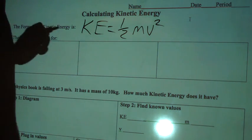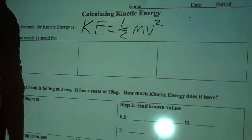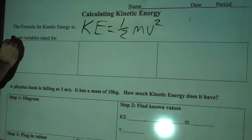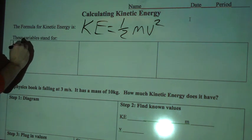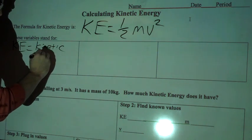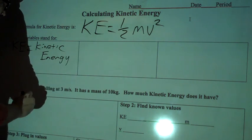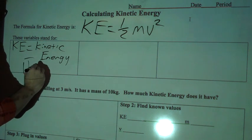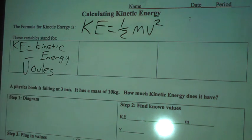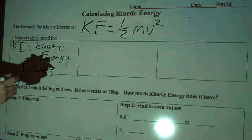KE equals one half mv squared. You should be copying this on the top of your paper right now. KE stands for kinetic energy and that's measured in joules, J-O-U-L-E-S, named after James Joules.